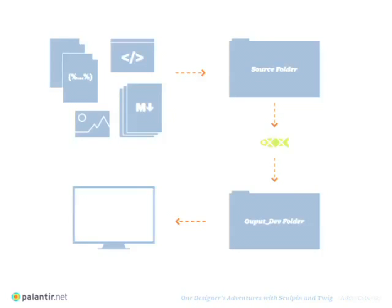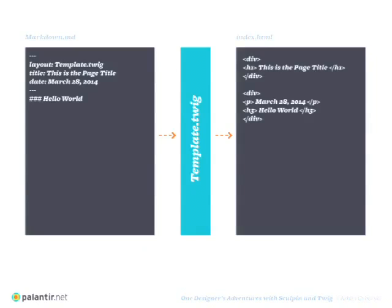So how does Sculpin work? Here's my little infographic about it. Over there you have your code, your Twig templates, your assets, your markdown files, and you put those into your source folder. Then you run your command line command, it goes through Sculpin — that little fish — and it comes out into your output folder, which is your site. All your data is where it's supposed to go, all your content is in the right places. It's pretty magical. This is a brief overview example — you have your markdown file with some YAML at the top. You call your layout first, you have a title, a date, and then your markdown.